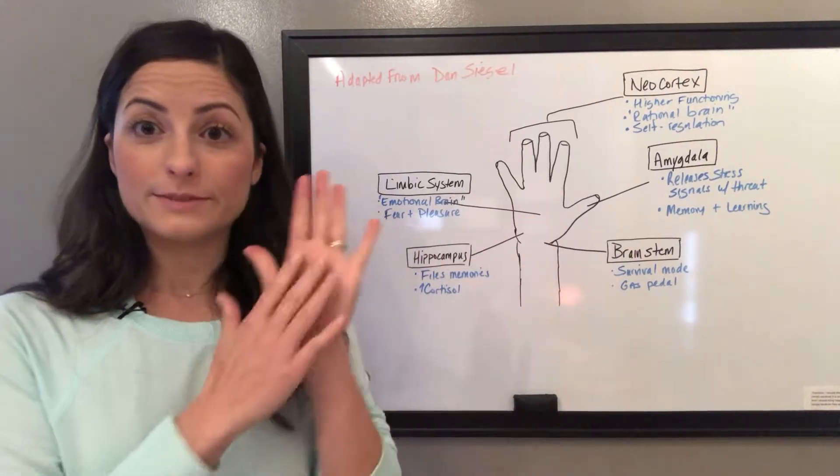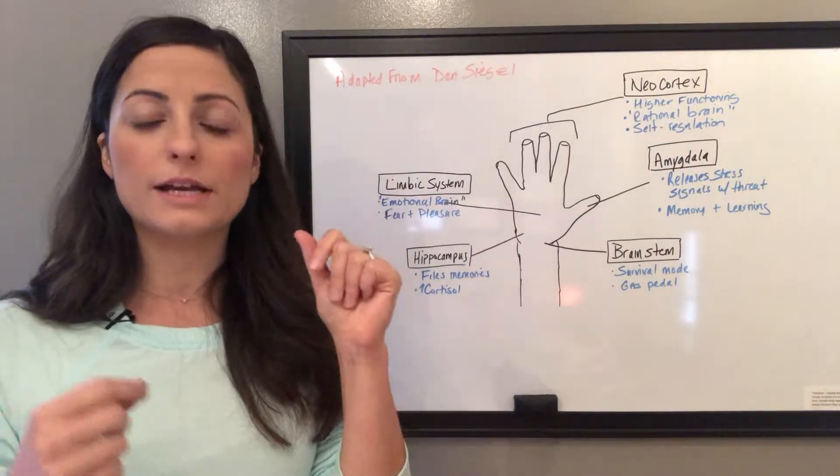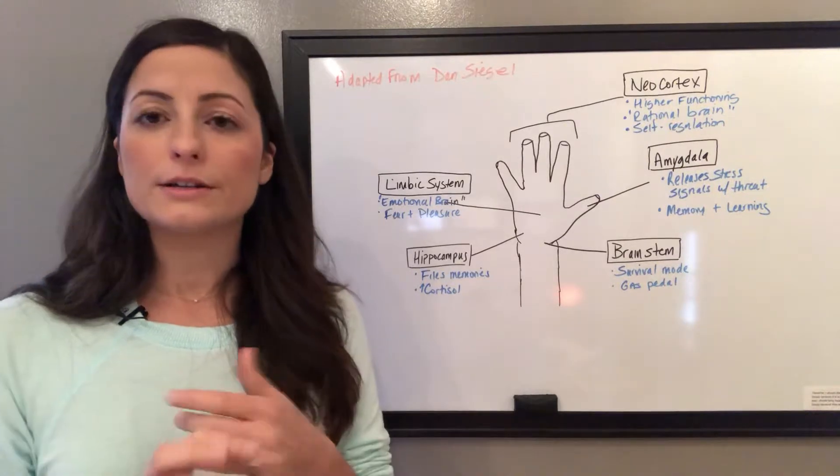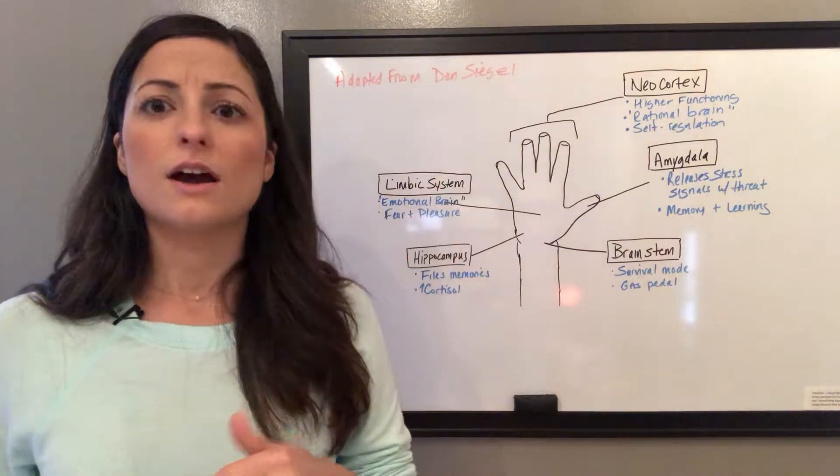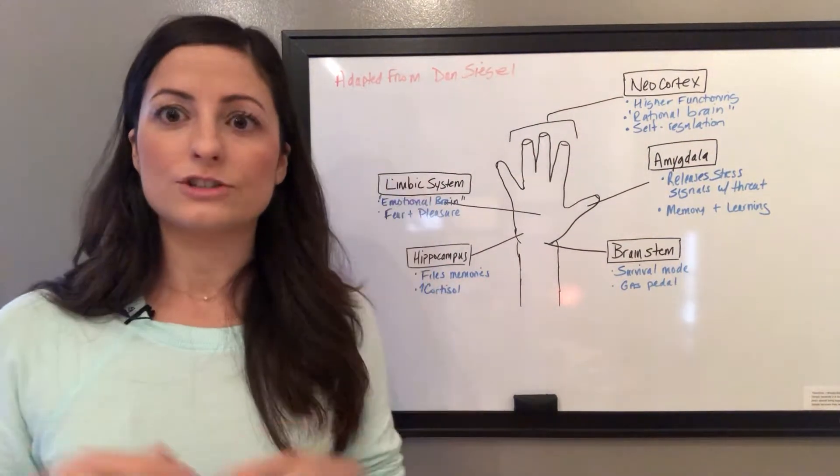And then your fingertips up here are part of the cognitive brain, or the outer part of the brain, the neocortex. That is responsible for self-regulation, higher level of functioning, discerning whether or not something is dangerous or safe, and it also helps with rationalization and logical thinking.